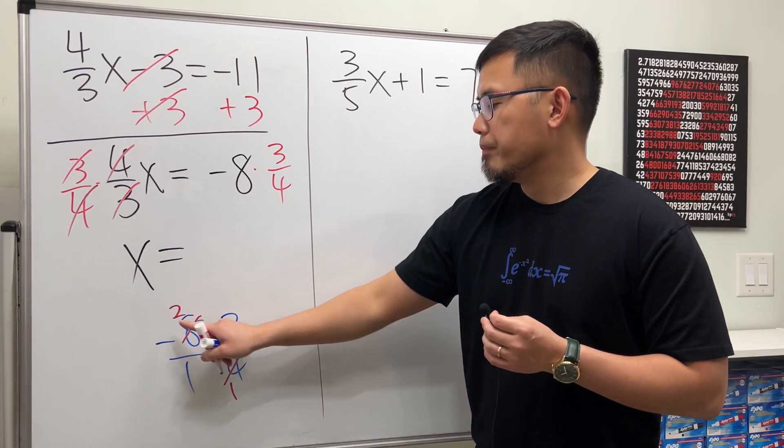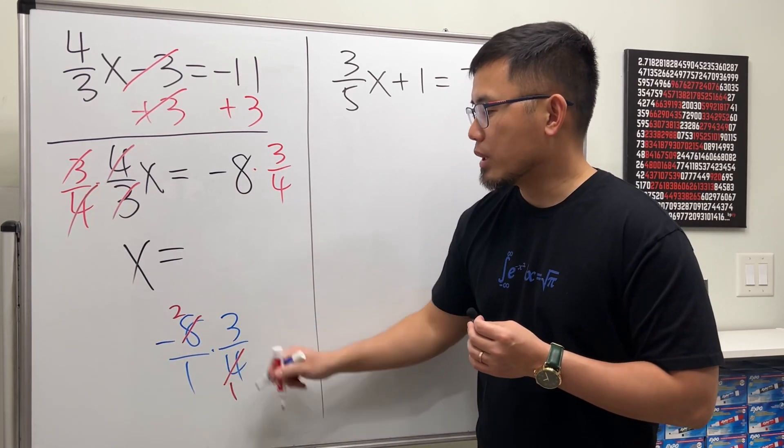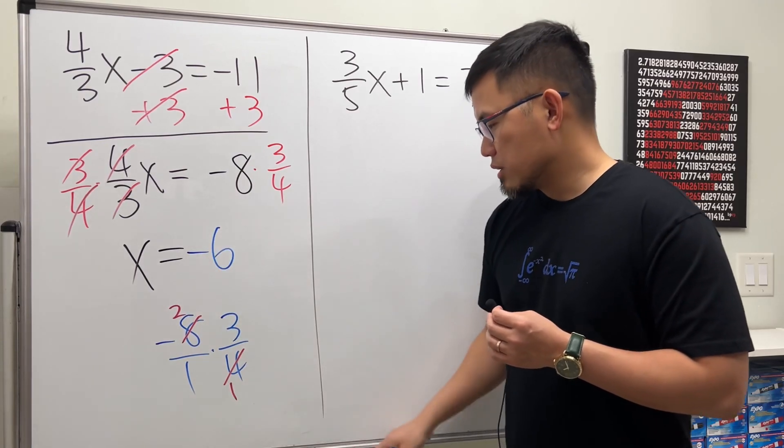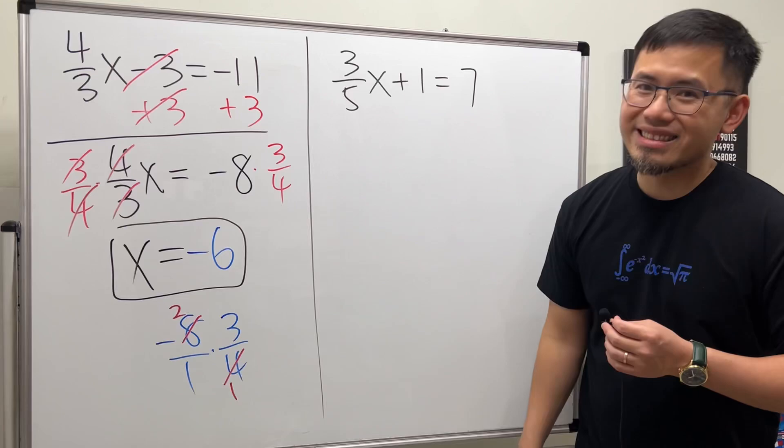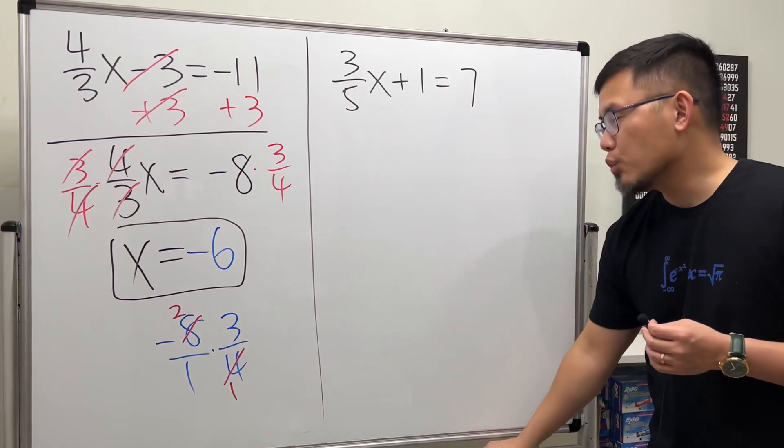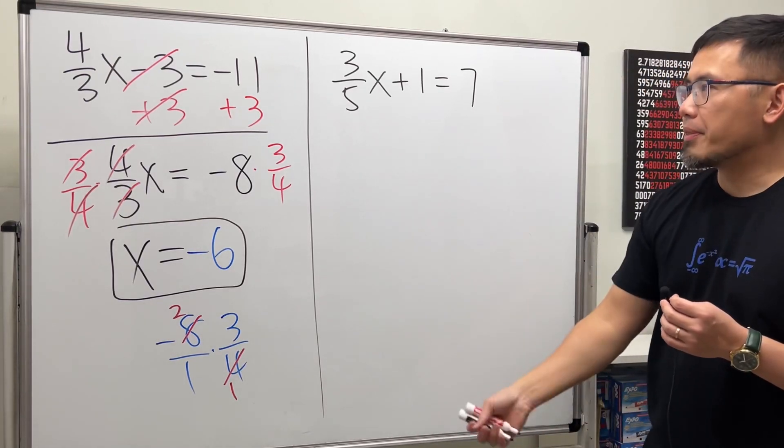So we have negative 2 times 3, and that gives us negative 6. The answer for the first one is x equals negative 6. Now for the second one, we'll do the same thing.